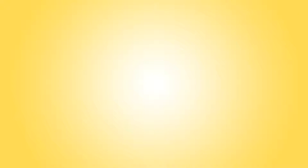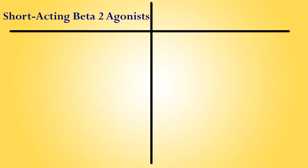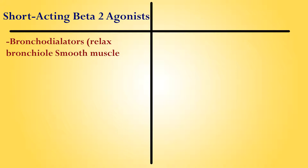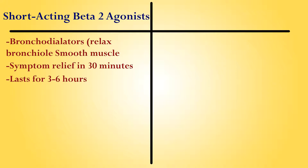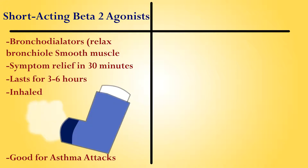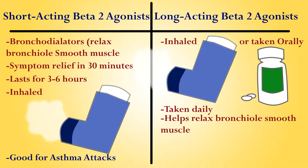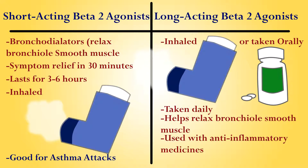One of the best ways to treat those symptoms is with beta-2 agonists. Short-acting beta-2 agonists are bronchodilators that relax the smooth muscle and provide symptom relief within 30 minutes, lasting 3 to 6 hours — usually inhaled and recommended for alleviating asthma attacks. Long-acting beta-2 agonists are inhaled or taken orally on a daily basis to help relax bronchial smooth muscle, and are used with anti-inflammatory medications to provide symptom relief for 12 to 24 hours.